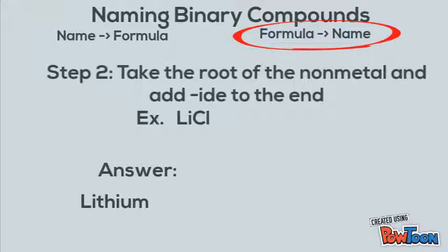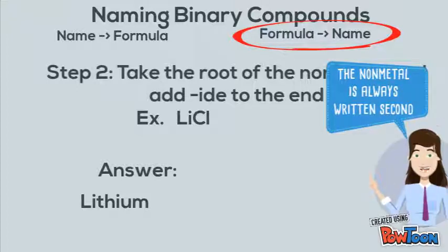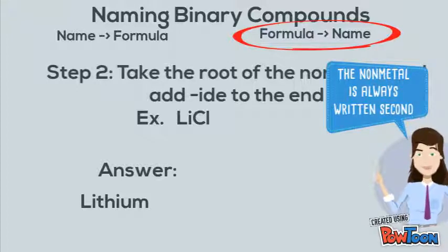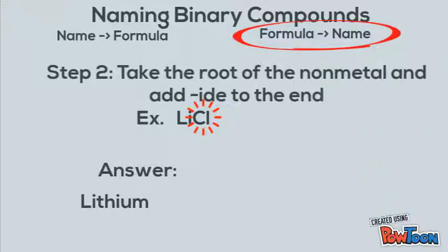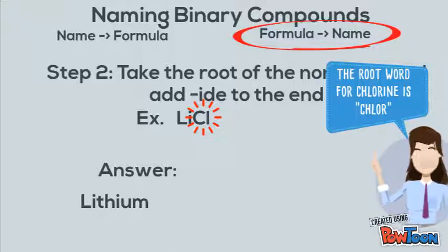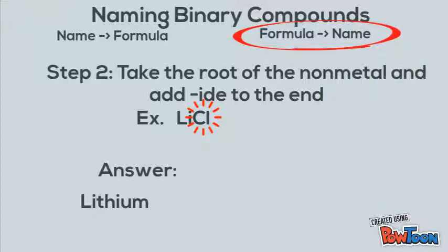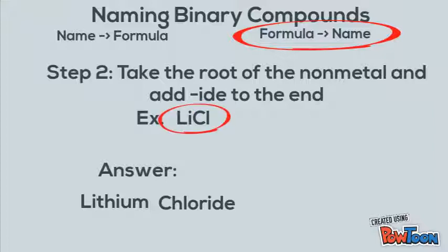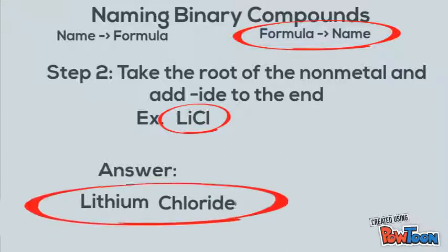Step number two is to take the root of the non-metal and add '-ide' to the end. The non-metal is always written second. In this example, Cl is our non-metal. We look that up — that's chlorine, and the root word for chlorine is 'chlor.' We add '-ide' to the end, giving us 'chloride.' So the name for LiCl is lithium chloride.